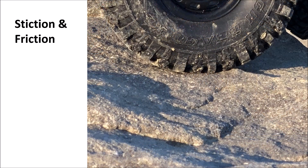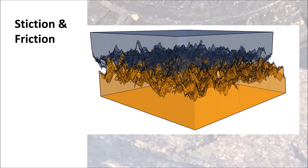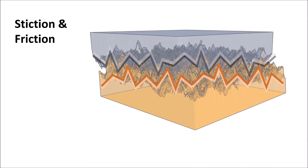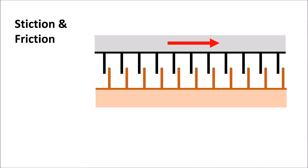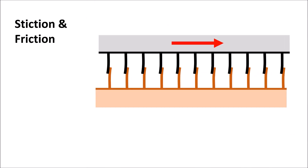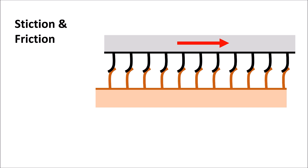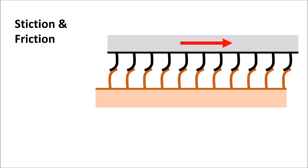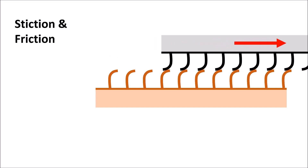The different amounts of forces required to overcome stiction or friction can be explained by the physical effects taking place at the object-ground interface on a microscopic scale.